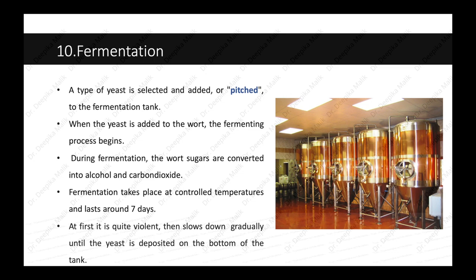When the wort is ready, it is added to the fermentation tank. The next step is fermentation, which takes place when a type of yeast is selected and added to the fermentation tank. The addition of yeast to the fermentation tank where the wort is present is called pitching. When the yeast is added to the wort, the fermentation process begins — wort sugars are converted into alcohols and carbon dioxide. Fermentation takes place at controlled temperatures and lasts around seven days. At first it is quite violent, then slows down gradually until the yeast is deposited on the bottom of the tank.